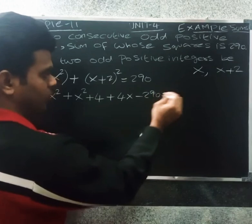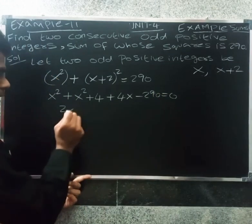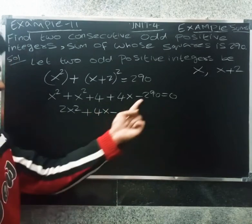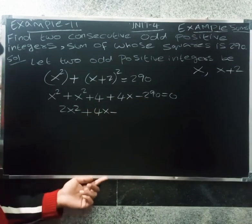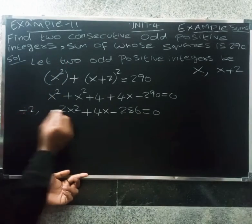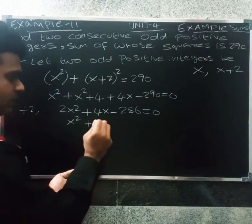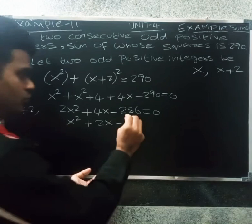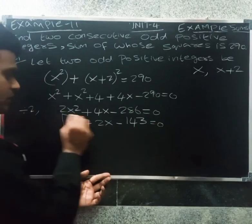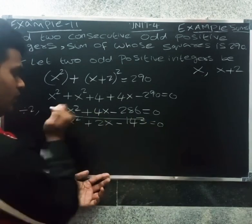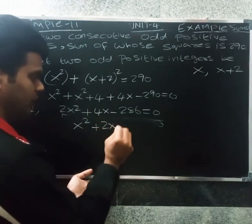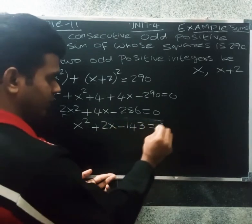So 2x square plus 4x minus 290 equals zero. Combining terms: 2x square plus 4x minus 286 equals zero. Divided by 2: x square plus 2x minus 143 equals zero.